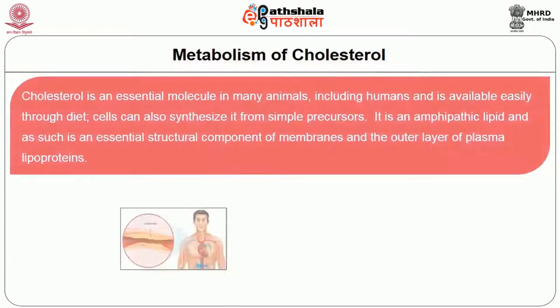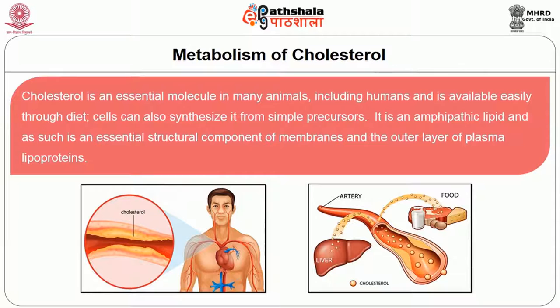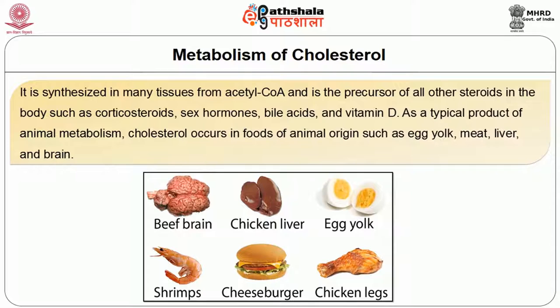Next, the metabolism of cholesterol. Cholesterol is an essential molecule in many animals, including humans, and is available easily through the diet. Cells can also synthesize it from simple precursors. It is an amphipathic lipid and as such is an essential structural component of membranes and the outer layer of plasma lipoproteins. It is synthesized in many tissues from acetyl-CoA and is the precursor of all steroids in the body such as corticosteroids, sex hormones, bile acids, and vitamin D.